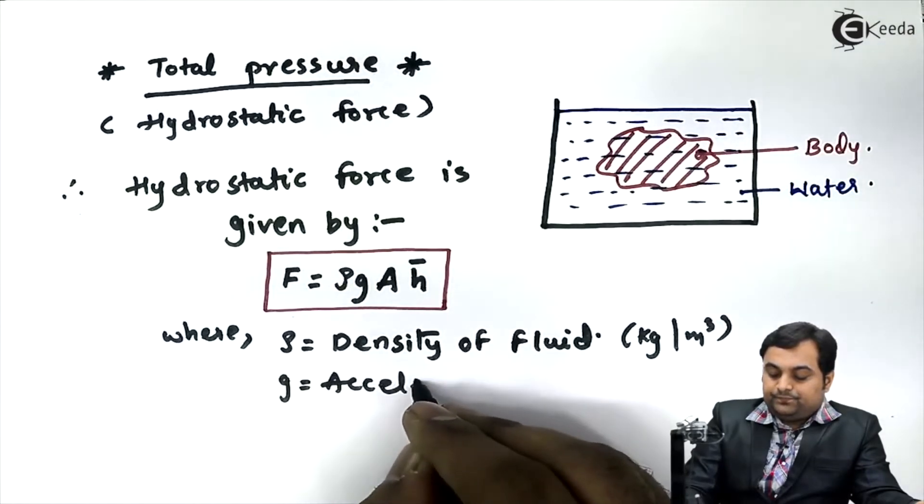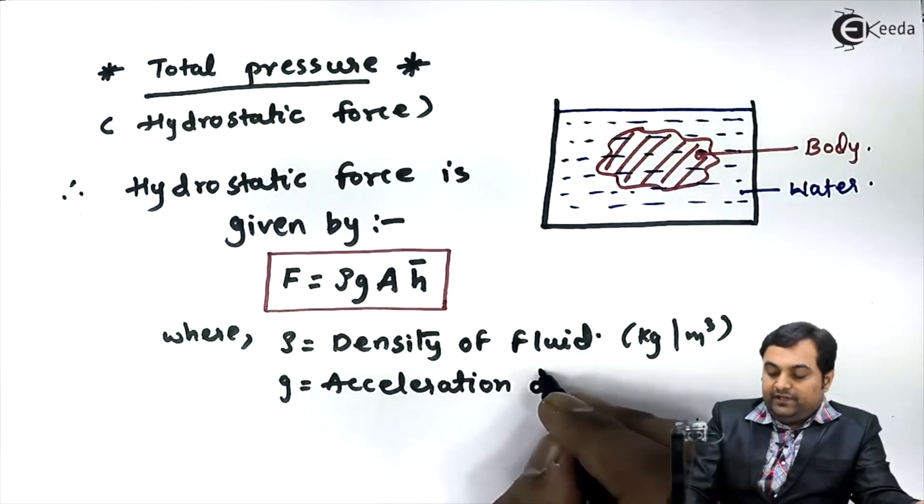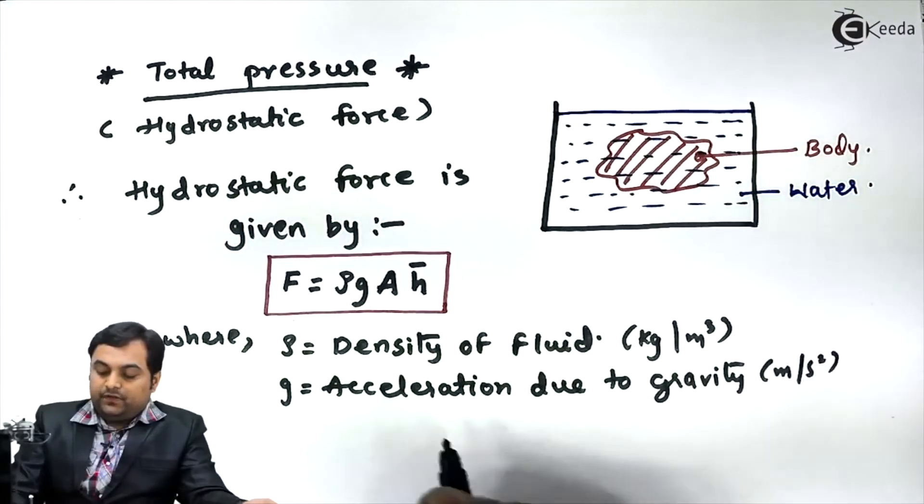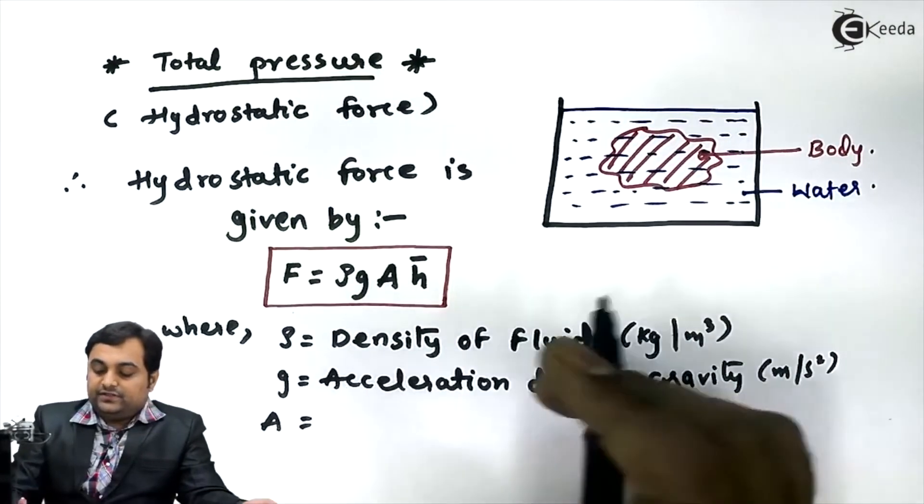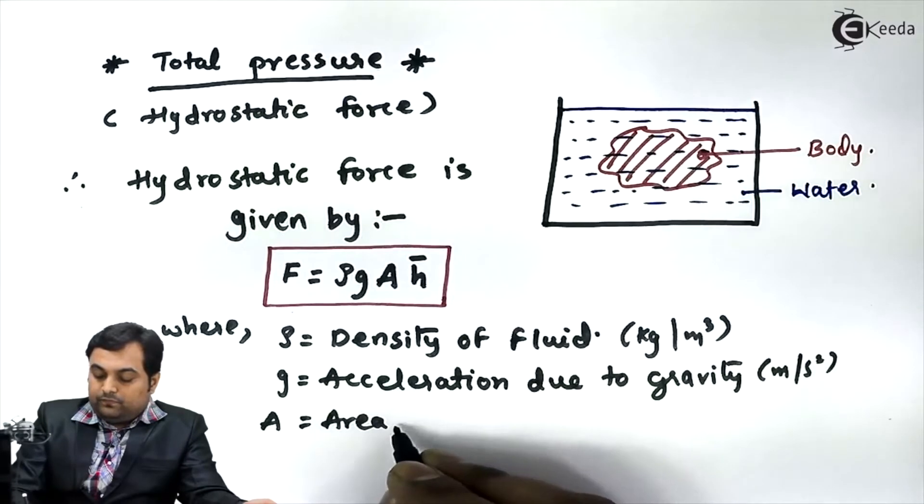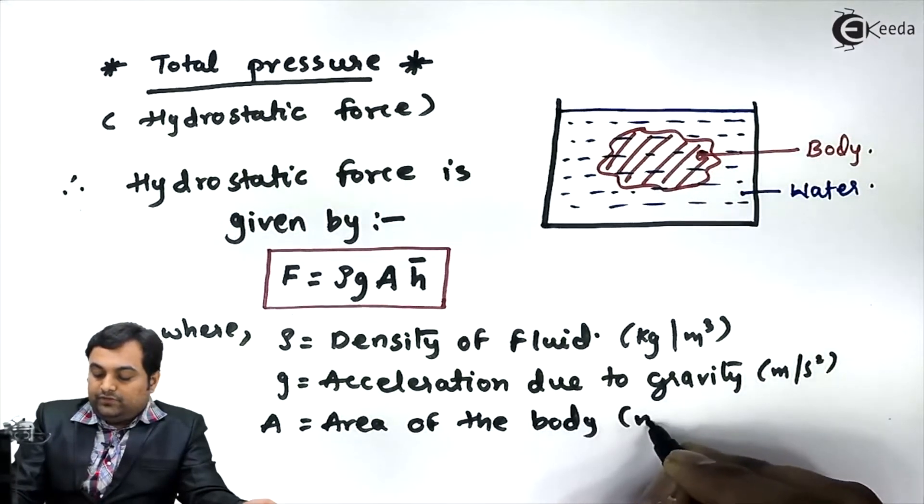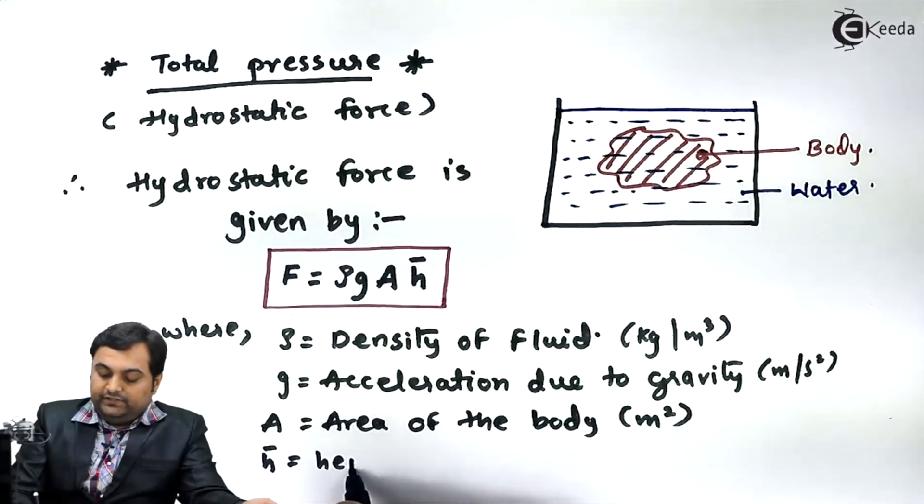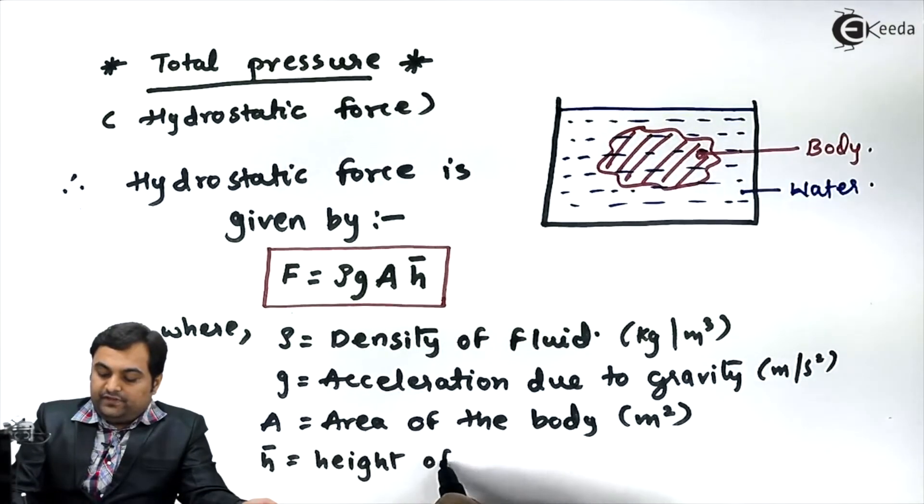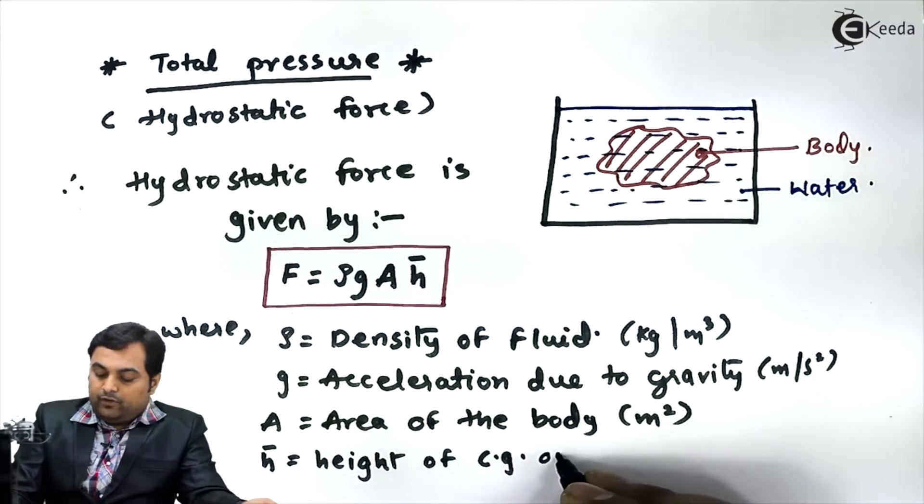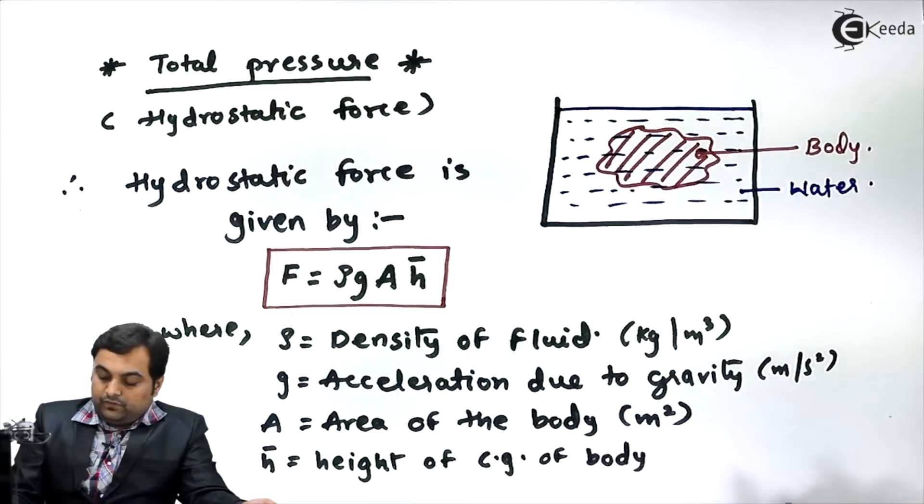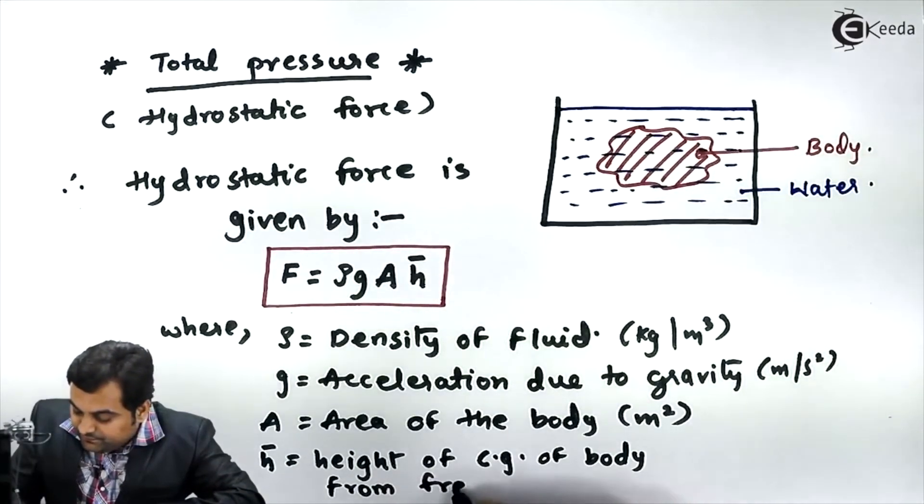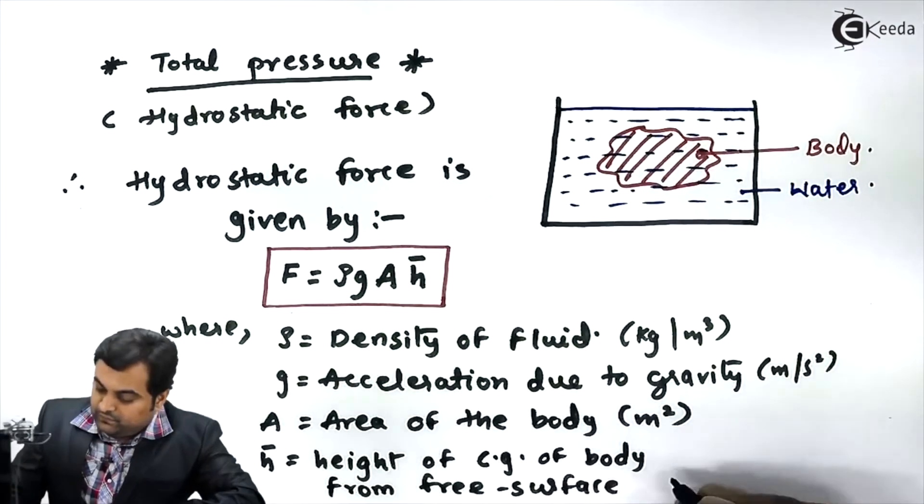due to gravity in meters per second squared. Capital A is the area of this body in meter squared. And H̄ is the height of center of gravity (CG) of the body from the free surface.